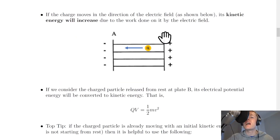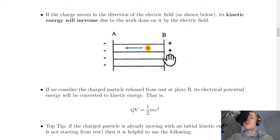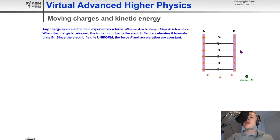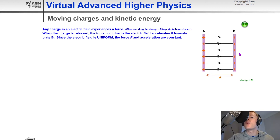If our positively charged particle is at the positively charged plate with maximum electrical potential energy, then if the charge moves in the direction of the electric field, its kinetic energy will increase due to the work done on it by the electric field. Going back to the simulation, we start with the charge Q at the negative plate, store energy as it moves against the electric field lines, and then if we let the charge go from the positively charged plate, its kinetic energy changes as it moves towards the negatively charged plate along the field lines.